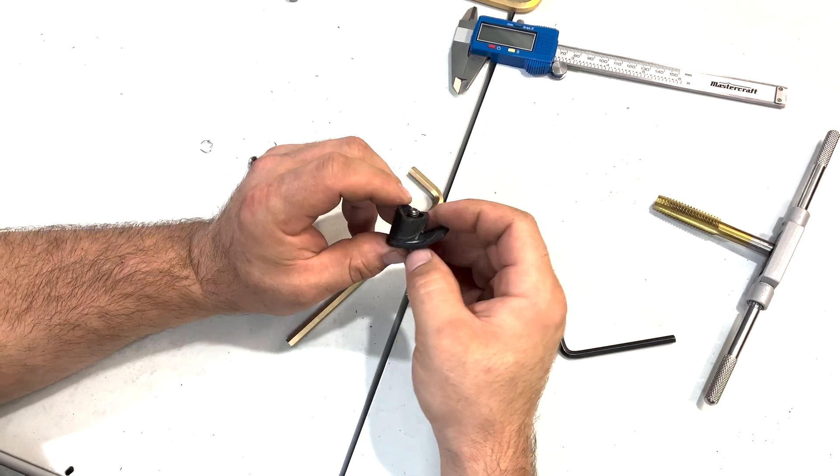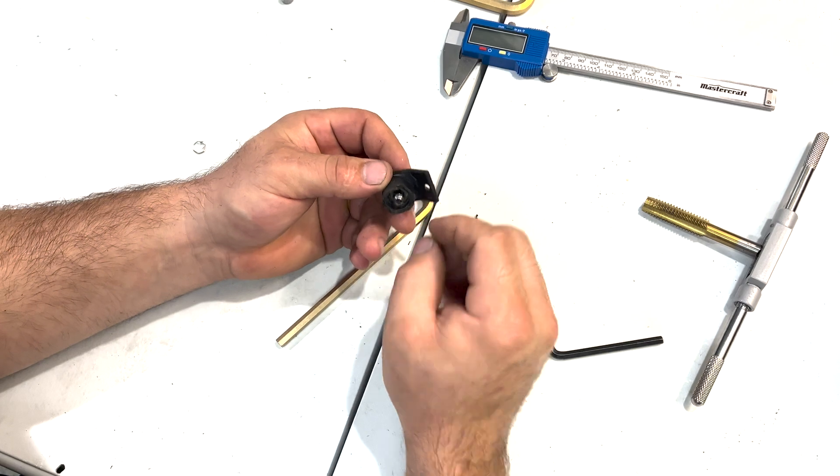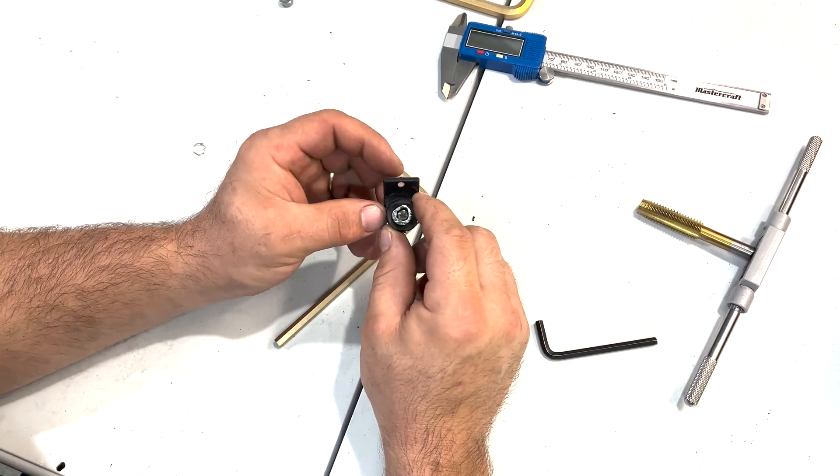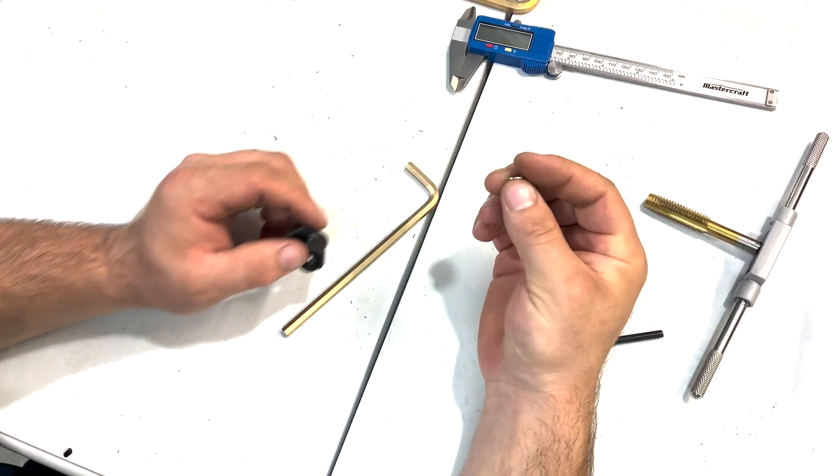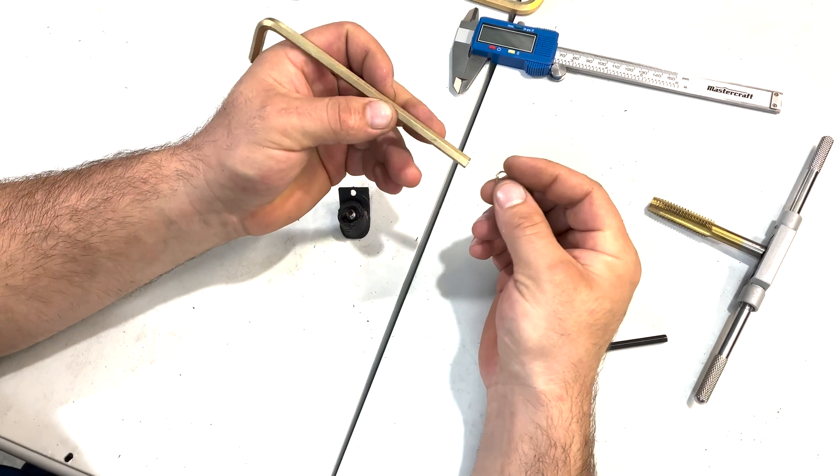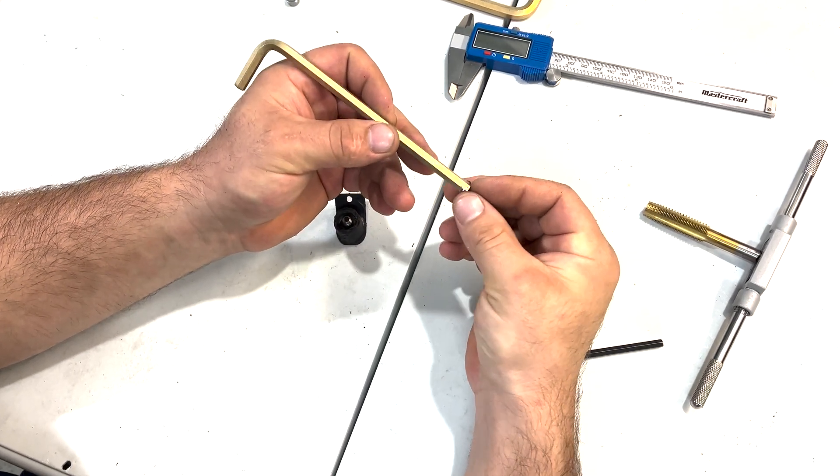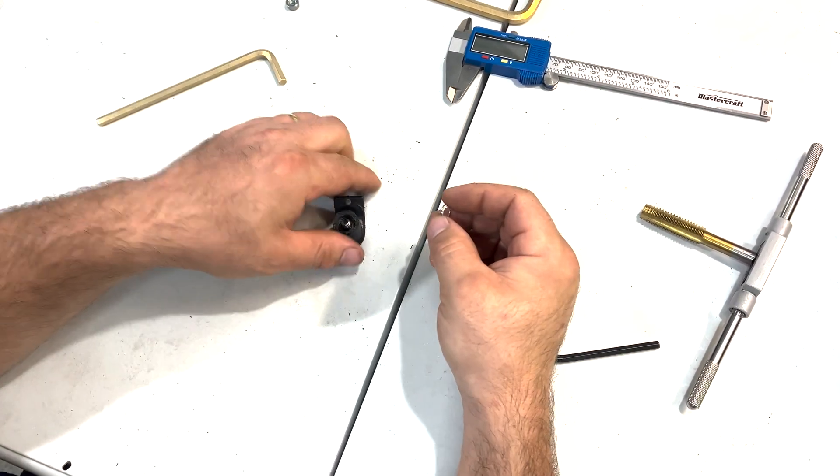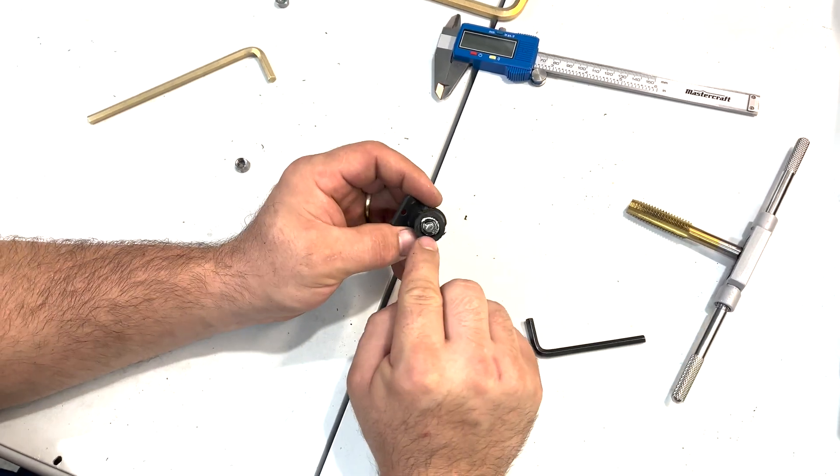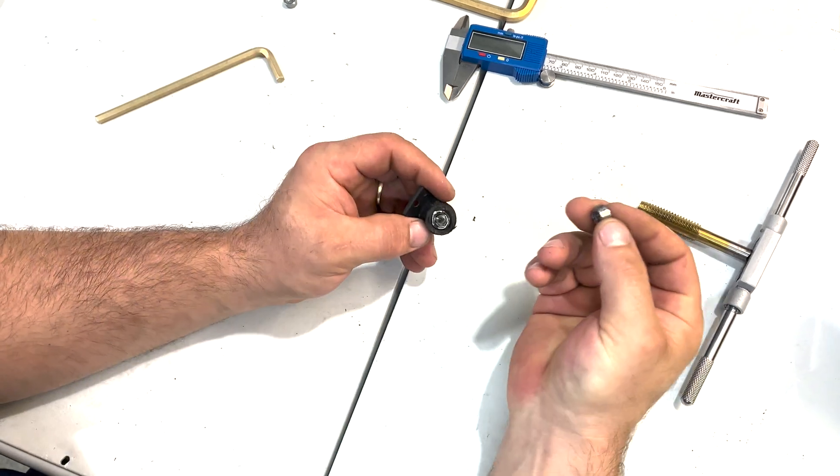As you can see it's coming together, we now have a plunger. Then I took some aluminum MIG welding wire and I wrapped it around a quarter inch allen key or maybe a 5/16, I can't remember what size. Then I placed that over top of the plunger bolt.